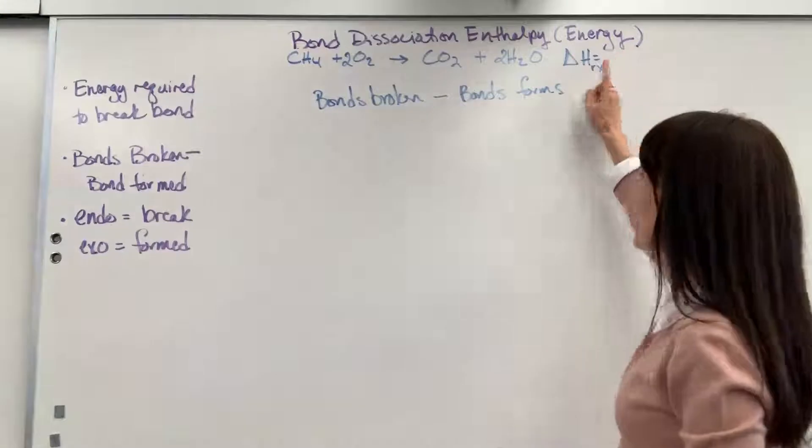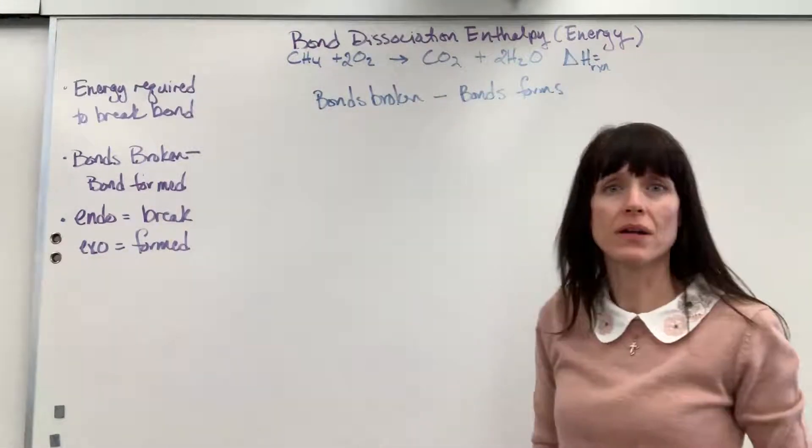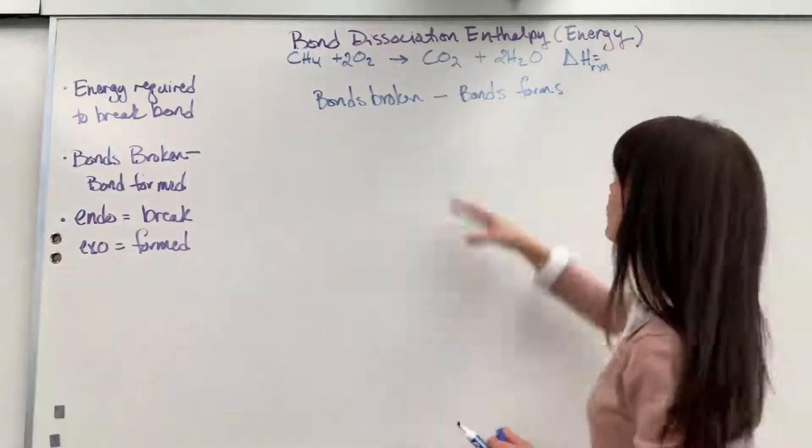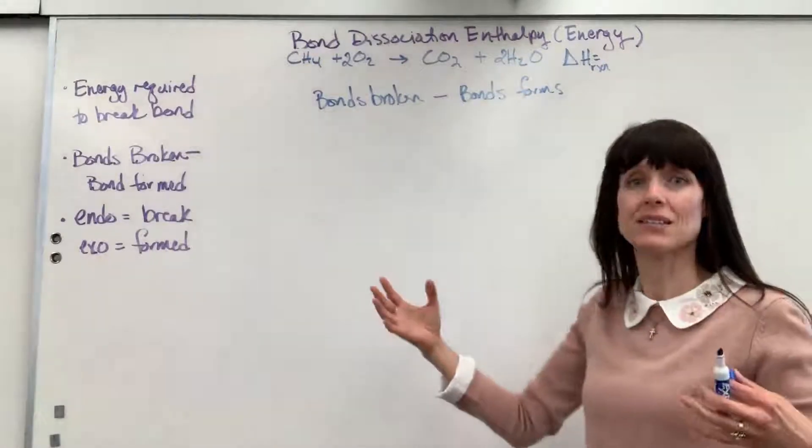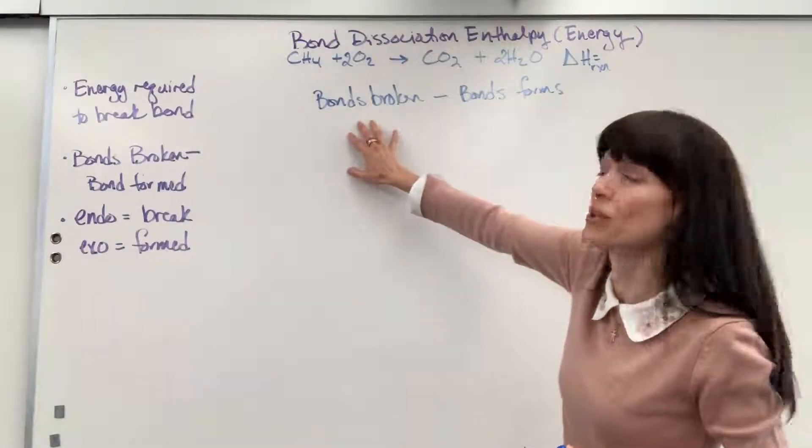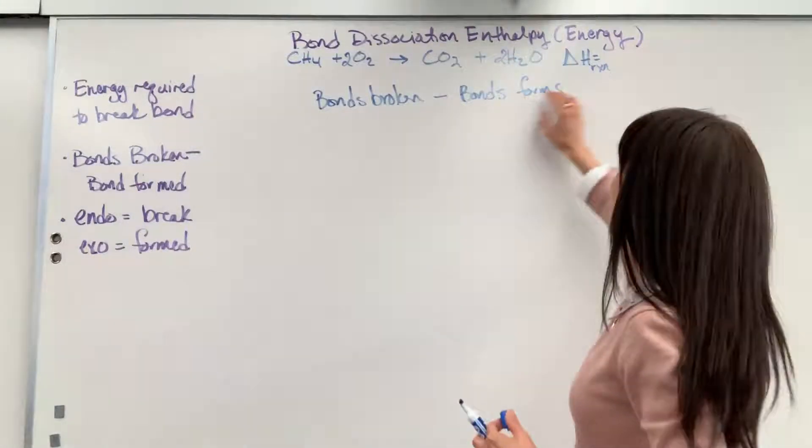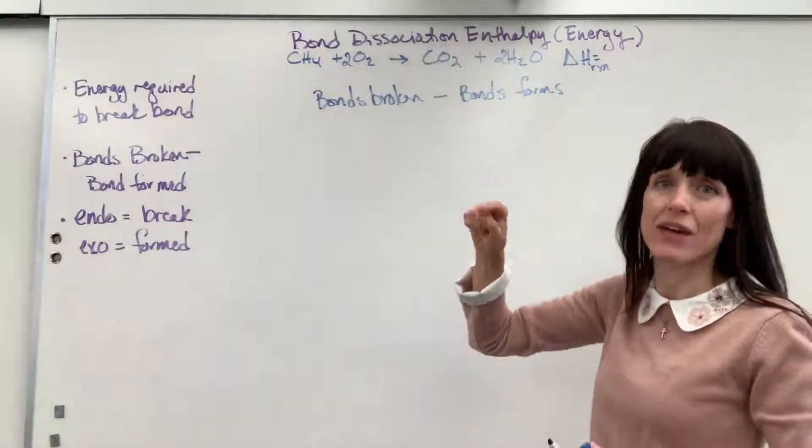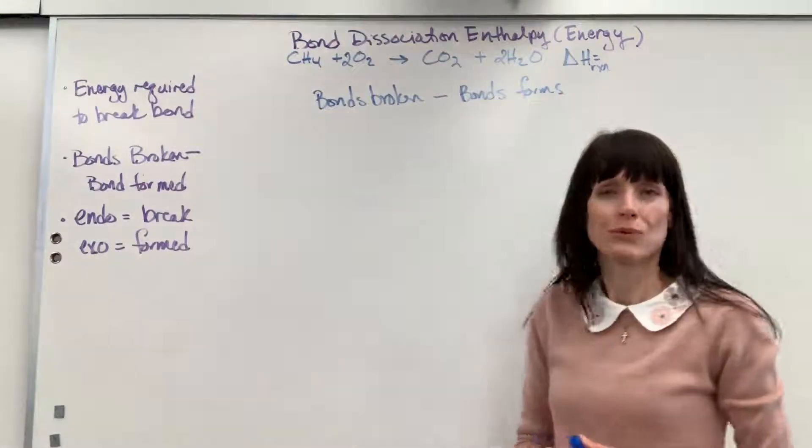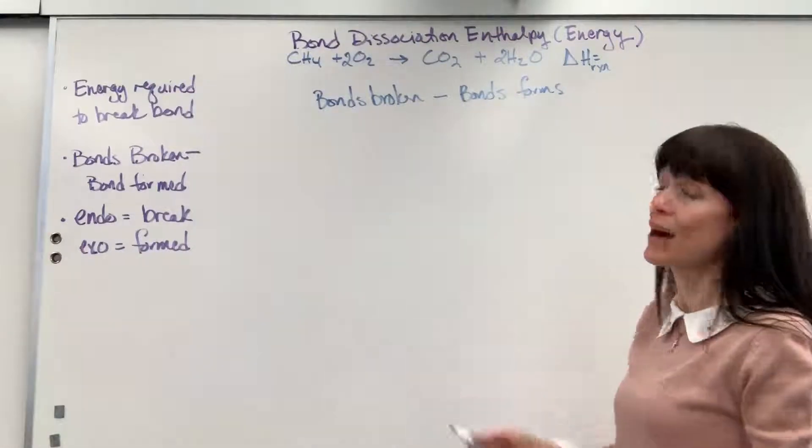It would be an endothermic reaction if it takes more energy to break bonds. To contrast that, if more energy is released when the bonds are formed than it took to break the bonds, then the net energy is a negative exothermic. More energy was released than was required to break bonds.